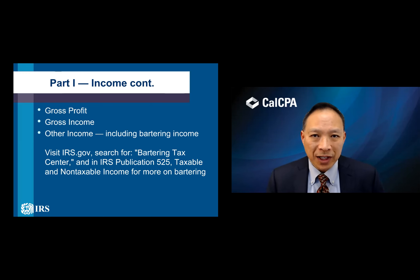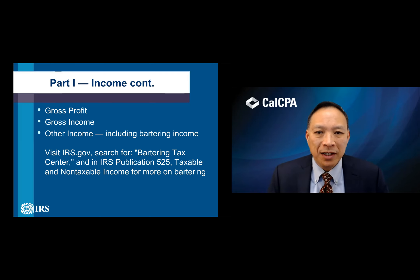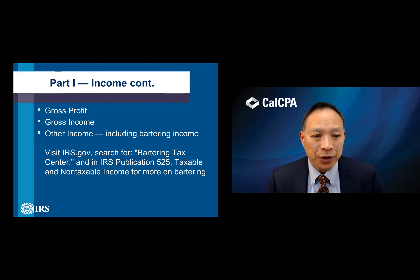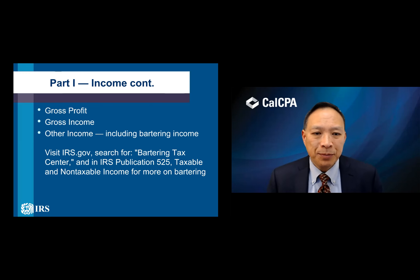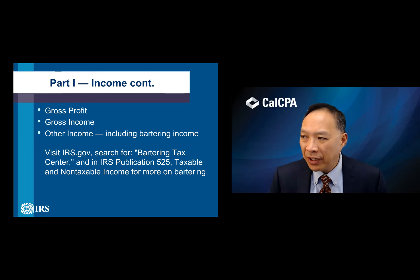In terms of income, always remember bartering income. There's always a question when the IRS audits your return — an audit doesn't mean anything is wrong; it's just a double-check, or numbers that don't look right could trigger one. You can go to irs.gov and in the search box type 'bartering tax center' — there's a whole webpage about that. Also see IRS Publication 525, Taxable and Non-Taxable Income, for more information about bartering.